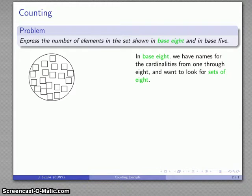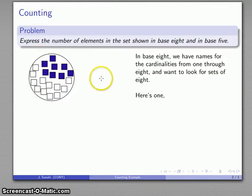And so, we might just color or circle a set of 8 as we find it. So, here's a set of 8. 1, 2, 3, 4, 5, 6, 7, 8. There's 8 of those squares. And if I look, well, there's another set of 8. And I have 4 squares left over.